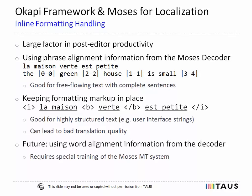Okapi framework and MOSES for localization currently provide two options for placing formatting and placeholders: using the phrase alignment information from the MOSES decoder, an option that is preferable for free-flowing text; or strict retention of the markup in place and translation of the text fragments in between, which is best for highly structured text like software UI strings. You can find a demonstration of the former using an OpenOffice Writer document in the document translation and web API demo. In the future, it would be good to use word alignment information available from specially trained MOSES MT systems for even better markup placement.